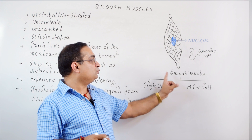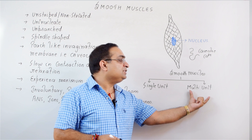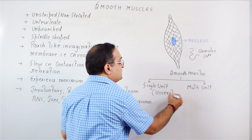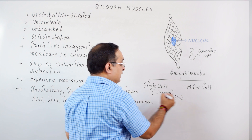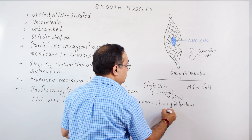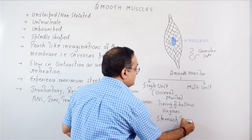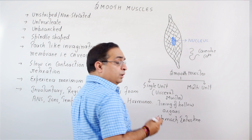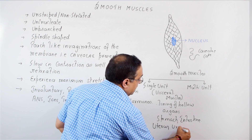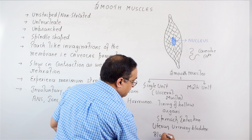There are two types of smooth muscles: single-unit smooth muscle fibers and multi-unit smooth muscle fibers. Single-unit smooth muscle fibers are also called visceral muscles. These form the lining of hollow organs such as the stomach, alimentary canal, intestine, lower part of the esophagus, uterus, urinary bladder, and walls of small blood vessels.